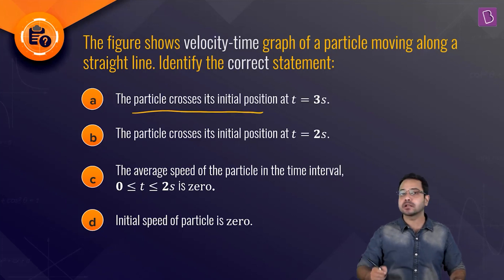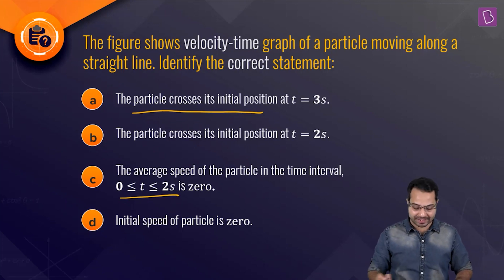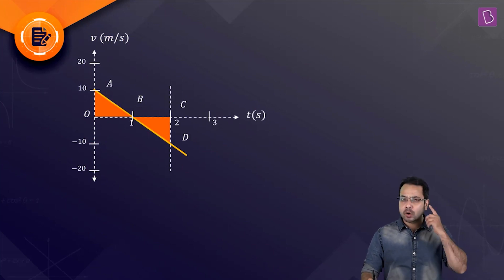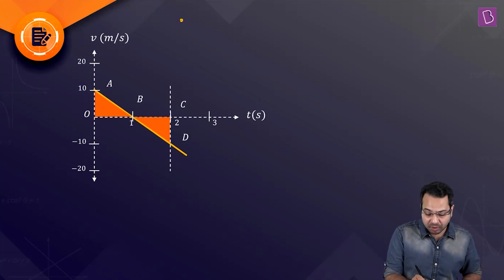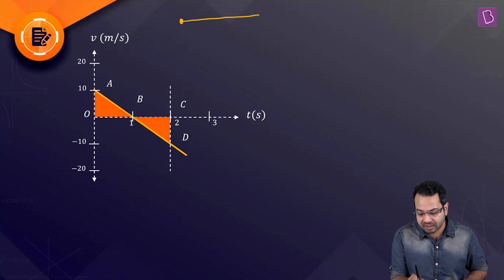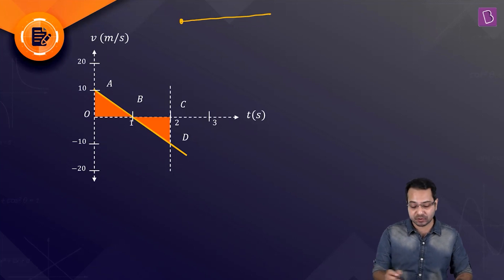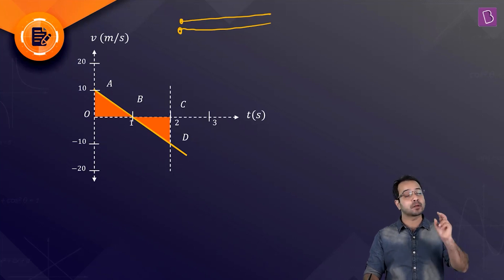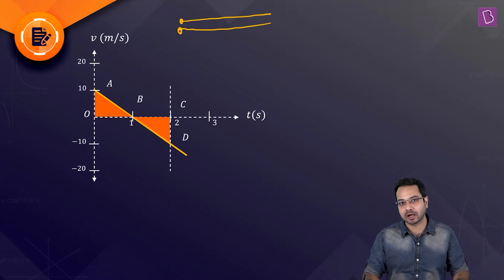What we need to figure out is: when does the particle cross its initial position, what is the average speed in the first two seconds, and what is the initial speed of the particle. If the particle is moving in a straight line and has to cross its initial position, it must return — meaning the particle has reversed direction. Does that show up in the graph?